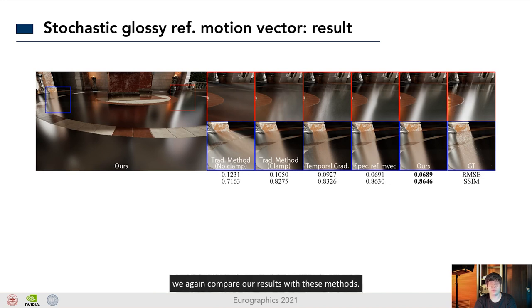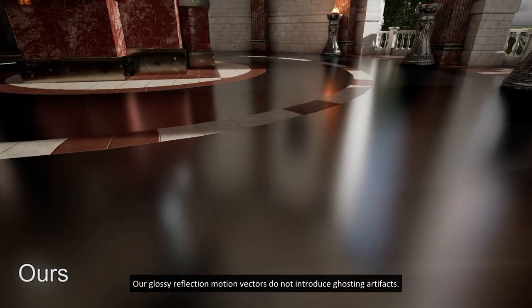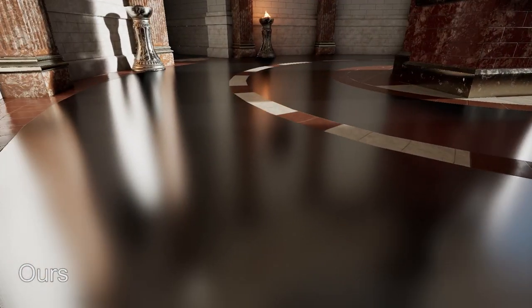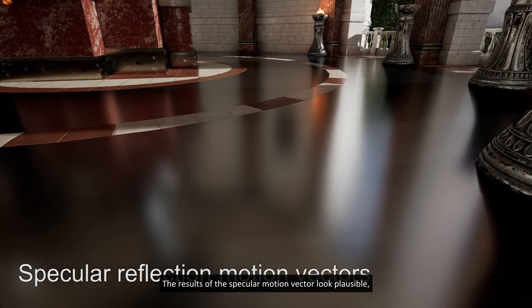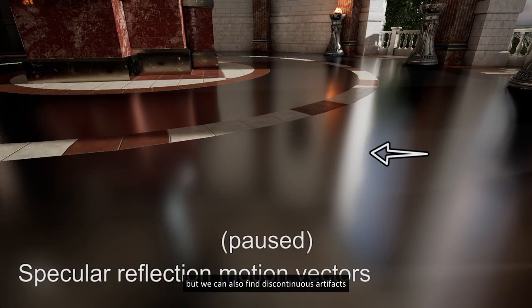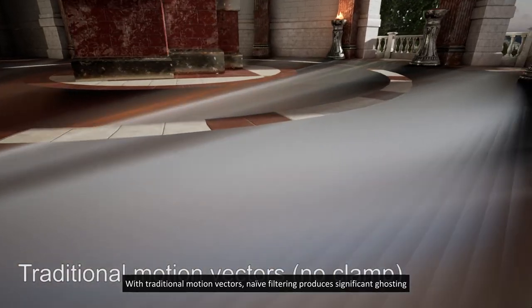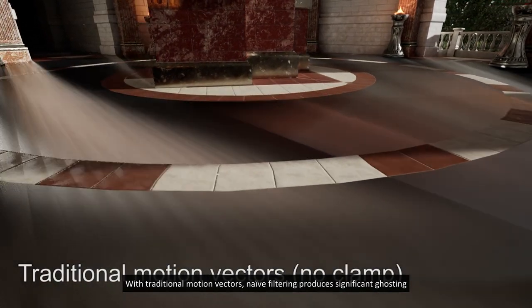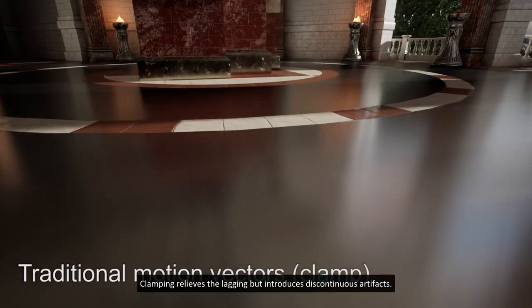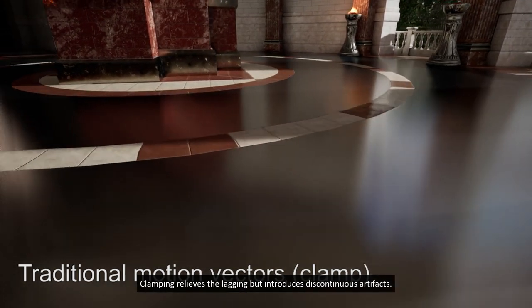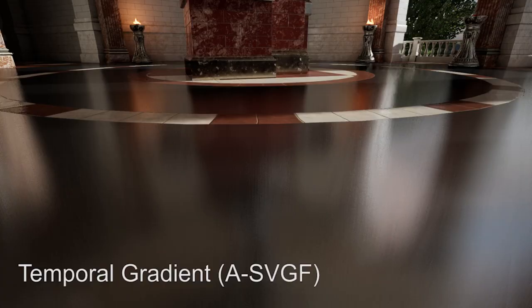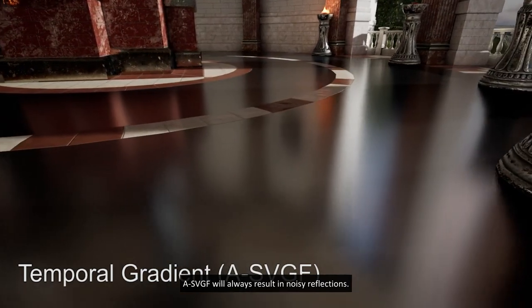Similar to shadows, we again compare our result with these methods. Specifically, we compare with the method using specular reflection motion vectors, also with clamping. Our glossy reflection motion vectors do not introduce ghosting artifacts. The result of the specular motion vector looks plausible, but we can also find discontinuous artifacts around the edge of the reflecting object. With traditional motion vectors, naive filtering produce significant ghosting. Clamping relieves the lagging but introduces the discontinuous artifacts. ASVGF will always result in noisy reflections.